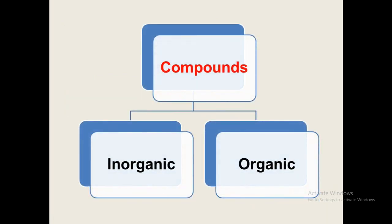Let us start our topic. First we see the introduction of this topic. What are compounds? In the first topic we have seen classification of matter. Matter is classified into pure substances and mixtures. In ancient time, minerals, plants and animals are the major sources of naturally occurring substances. Pure substances are again classified into elements and compounds. Compounds are classified on the basis of source from which they are obtained.